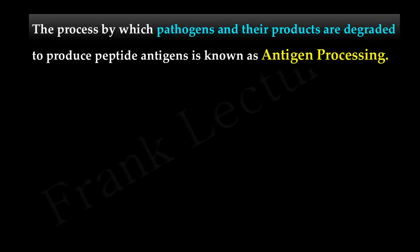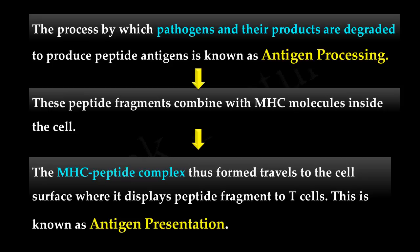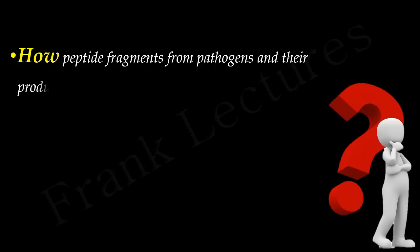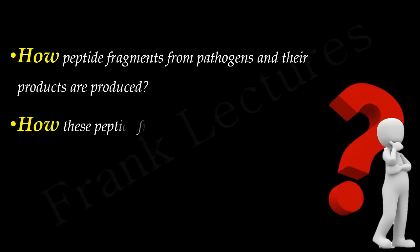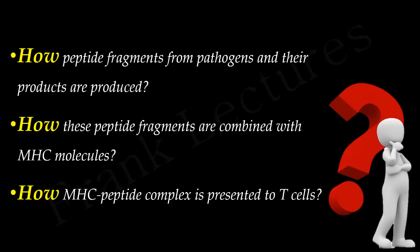Now we can understand what antigen processing and presentation means. The process by which pathogens and their products are degraded to produce peptide antigens is known as antigen processing. These peptide fragments combine with MHC molecules inside the cell. The MHC-peptide complex thus formed travels to the cell surface where it displays the peptide fragment to T cells — this is known as antigen presentation. In this lecture we will see how peptide fragments are produced, how they combine with MHC molecules, and how the MHC-peptide complex is presented to T cells.